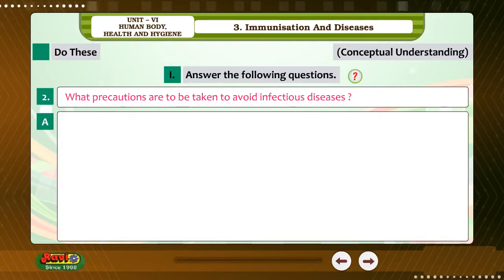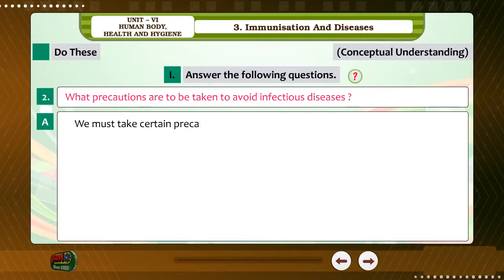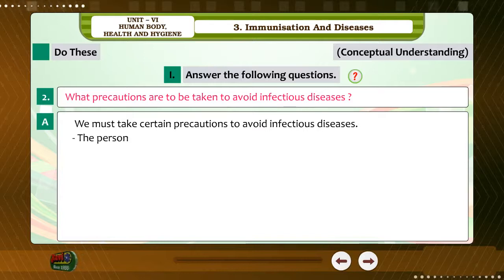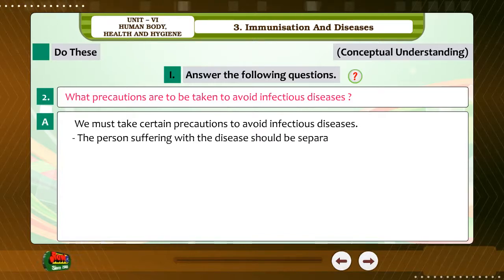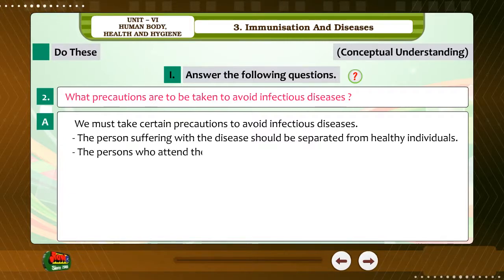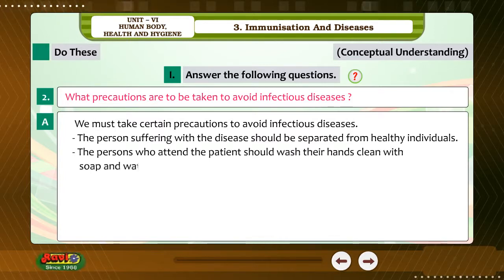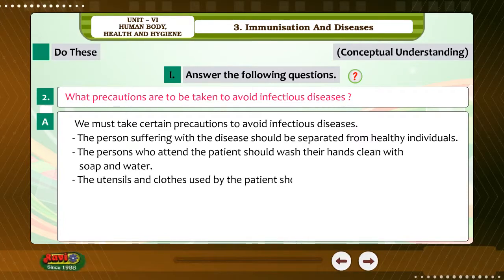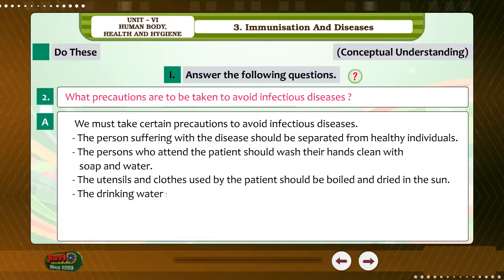Question 2: What precautions are to be taken to avoid infectious diseases? Answer: We must take certain precautions to avoid infectious diseases. The person suffering with the disease should be separated from healthy individuals. The persons who attend the patient should wash their hands with soap and water. The utensils and clothes used by the patient should be boiled and dried in the sun. The drinking water should be boiled, cooled, and used.